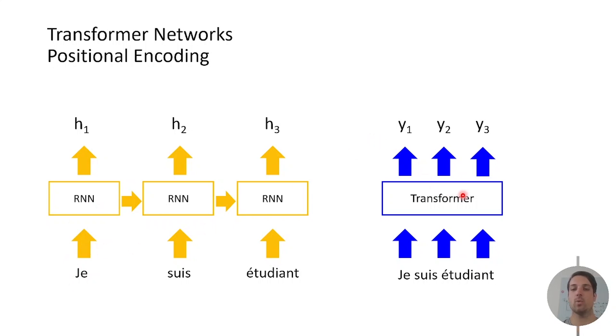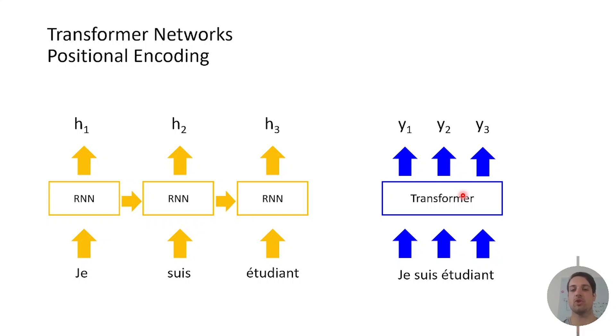But this has a disadvantage because due to a missing recurrent structure we don't know any positional information of the numerical values anymore. So this position information needs to be inherited and this is done by the positional encoding.